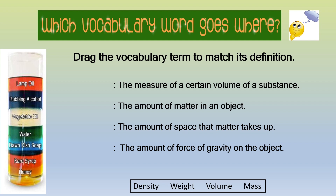Try the vocabulary term to match its definition. Let us read all of the definitions together. Number one: the measure of a certain volume of a substance. Number two: the amount of matter in an object. Number three: the amount of space that matter takes up. And number four: the amount of force of gravity on the object. Let's get started.